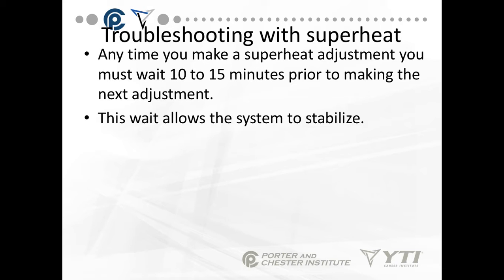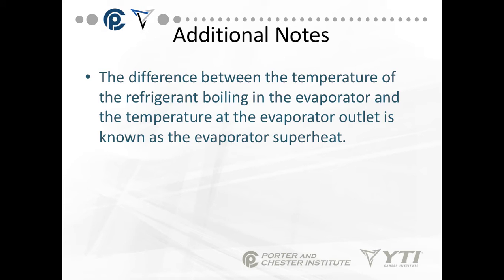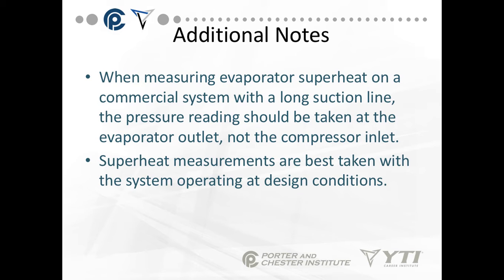The difference between the temperature of refrigerant boiling in the evaporator and the temperature at the evaporator outlet is known as evaporator superheat. When measuring evaporator superheat on a commercial system with a long suction line, pressure readings should ideally be taken at the evaporator outlet, not the compressor inlet. In practice you're usually not able to do that, which is why you add the 2 psi adjustment. Superheat measurements are best taken with the system operating at design conditions — the box cold, the evaporator cold, out of defrost, and stable.